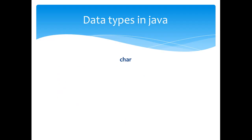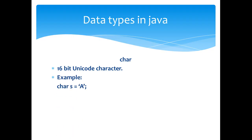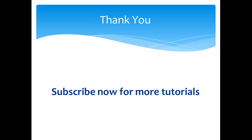And finally, the character type. It is a 16-bit Unicode character type. Example: char s is equal to 'a'. These are the primitive data types available in Java. Thank you for watching, please subscribe to my channel for further video updates. See you in the next part of this tutorial.